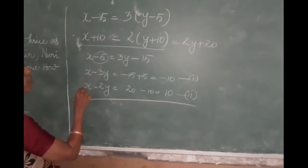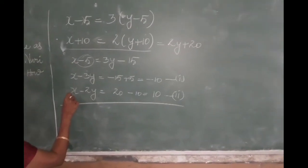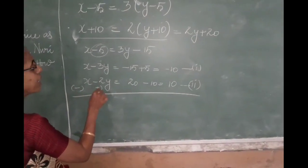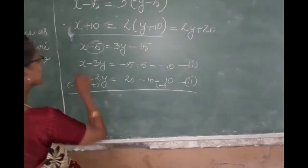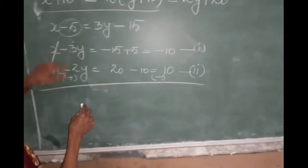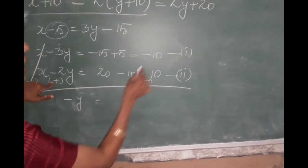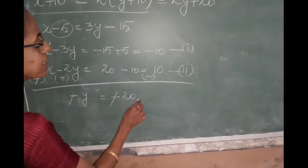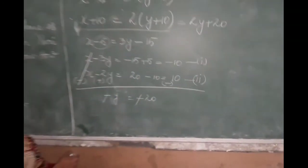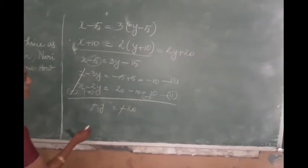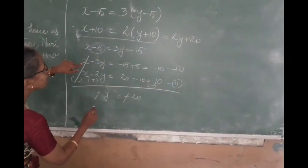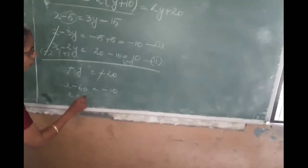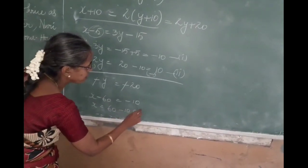Now you can solve. Again, the variable x has coefficient as 1. You can eliminate using the elimination method. Change the side and then add. X and x getting cancelled, minus 3y plus 2y is minus y. Minus 10 minus 10 is minus 20. So you will be getting y is equal to 20. This can be substituted. X minus 60 will be equal to minus 10, or x is equal to 60 minus 10, which is 50.